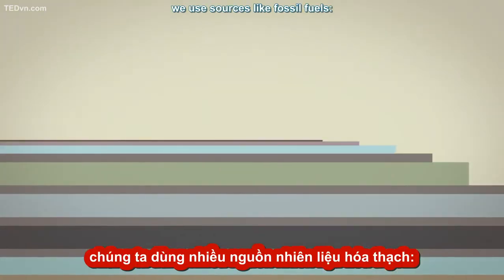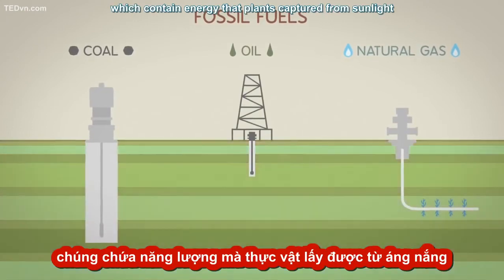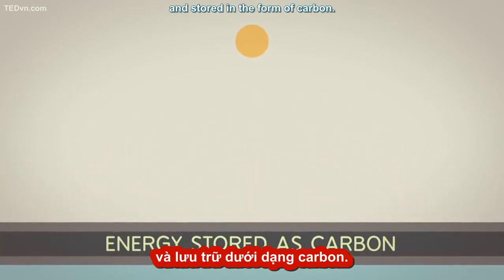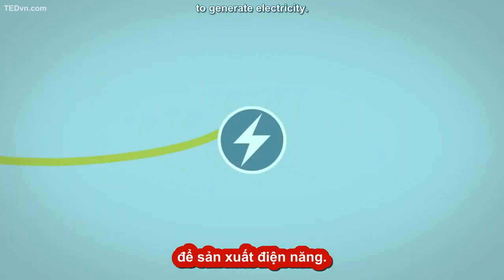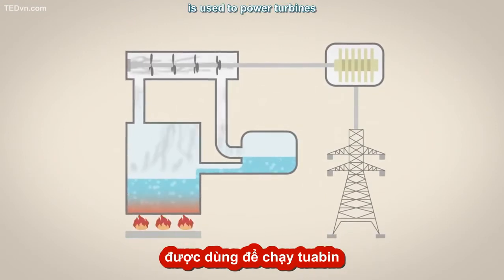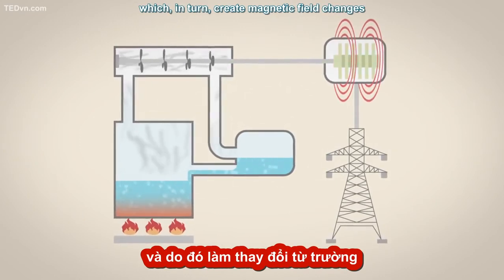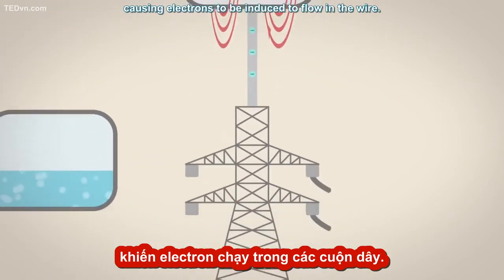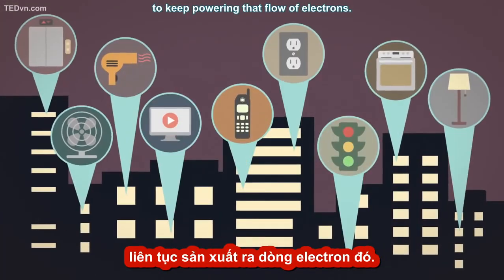To do all this, we use sources like fossil fuels — coal, oil, and natural gas — which contain energy that plants captured from sunlight long ago and stored in the form of carbon. When we burn fossil fuels in power plants, we release this stored energy to generate electricity. Heat from burning fossil fuels is used to power turbines that rotate magnets, which in turn create magnetic field changes relative to a coil of wire, causing electrons to be induced to flow in the wire. Modern civilization depends on our ability to keep powering that flow of electrons.